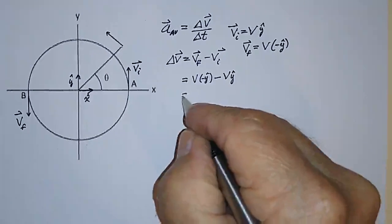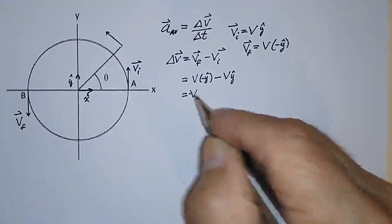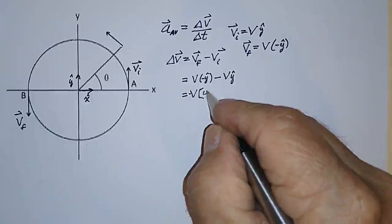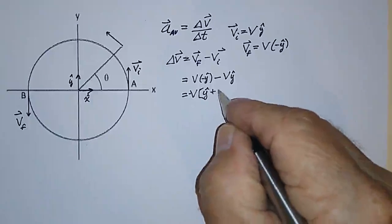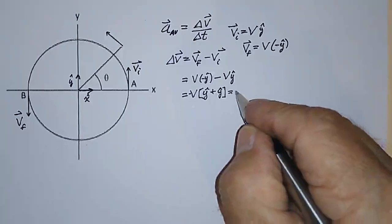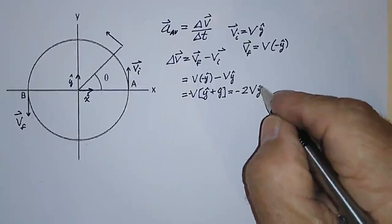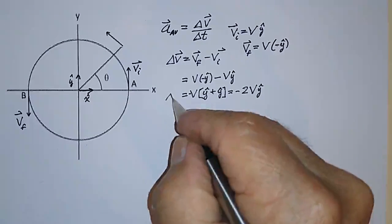And that can also be written as V with a minus sign in front of it, times Y hat plus Y hat, and that's just equal to minus 2V in the Y hat direction. That's what delta V is.